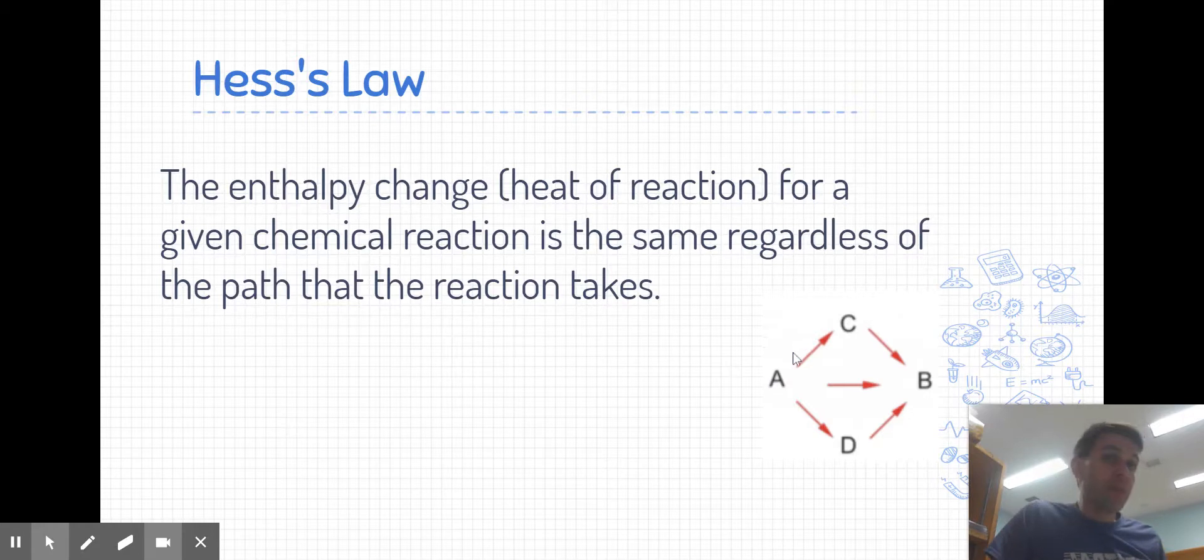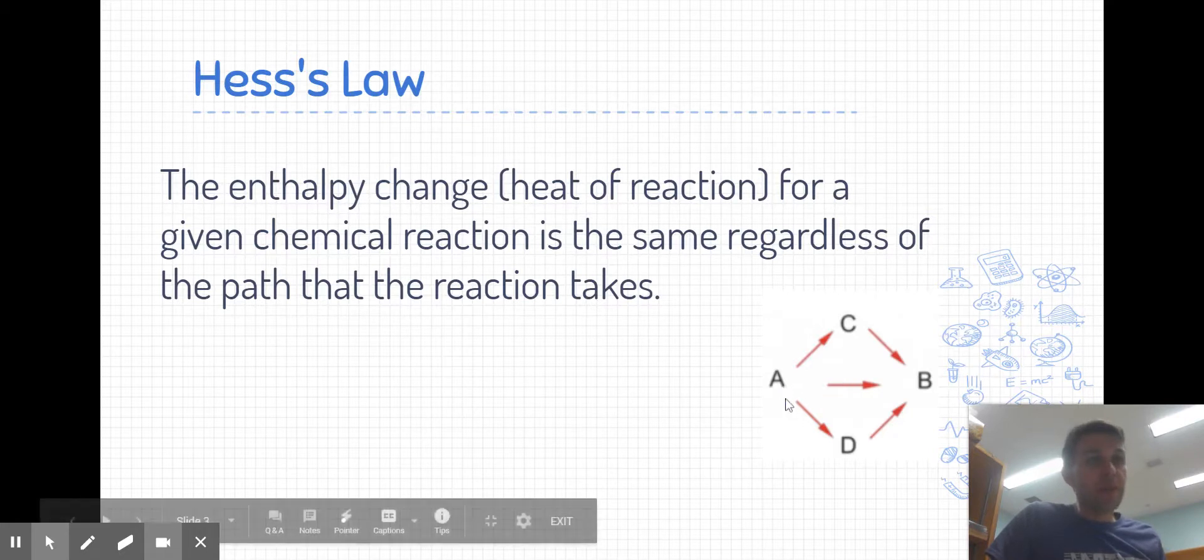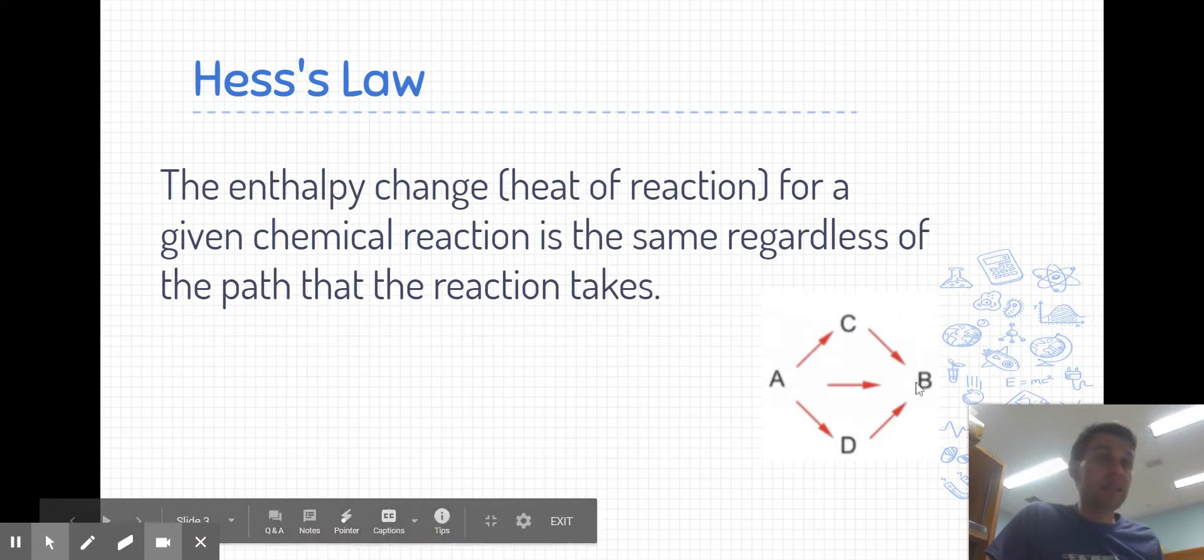For a reaction converting reactants A to products B, there might be a direct path, but there also might be some indirect paths where A gets converted to C first, and then C gets converted to B. Or likewise, A gets converted to D, and D gets converted to B.